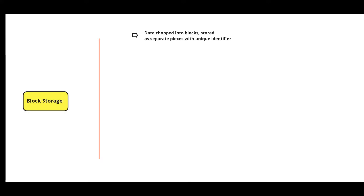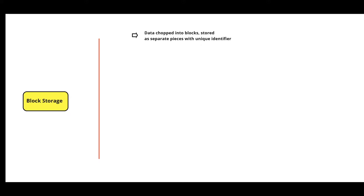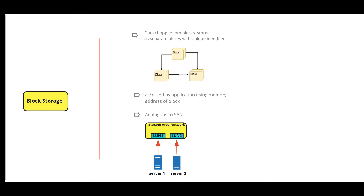Next, let's talk about block storage. Block storage breaks up data into smaller chunks called blocks and stores those blocks as separate pieces, each with a unique identifier. These blocks can be accessed by applications using the memory address of the block. This is analogous to a Storage Area Network, or SAN, which enterprises use as block storage attached to servers, appearing as if the volume is running locally.